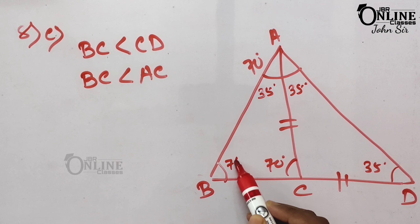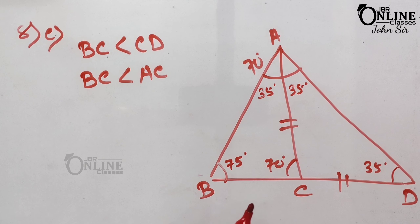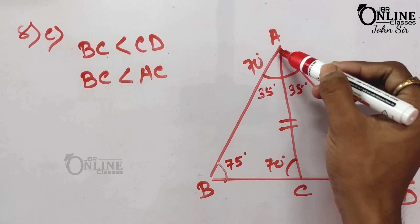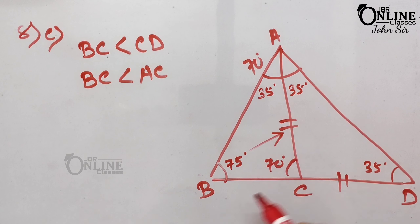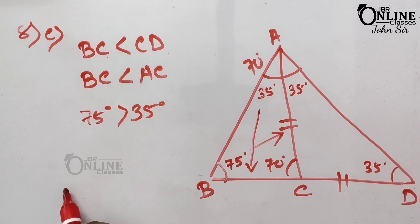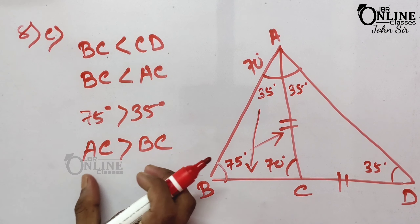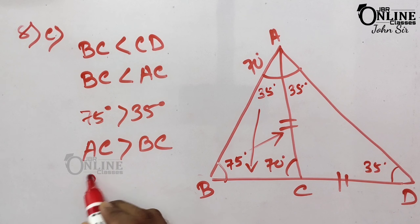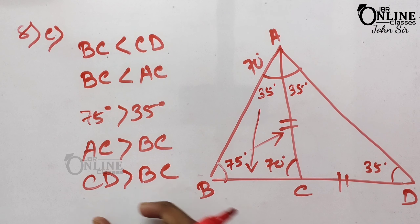In triangle ABD: angle A = 70°, angle D = 35°, so the third angle = 75°. In triangle ABC: AC is opposite 75° and BC is opposite 35°. Since 75° > 35°, we get AC > BC. Since AC = CD, it follows that CD > BC, i.e., BC < CD. It is proved.